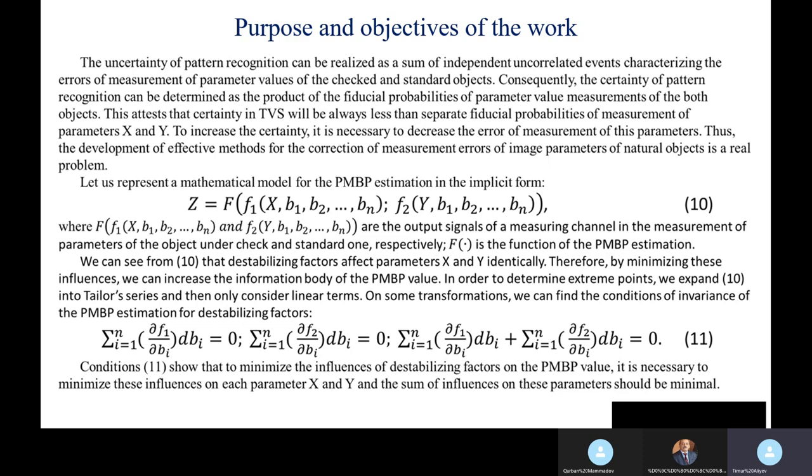In order to determine the extent points, we expand expression 10 into Taylor series and then only consider linear terms. On some transformations, we can find the conditions of invariance of the PMBP estimation for the stability factors, represented in expression 11. Conditions 11 show that to minimize the influences of the stability factors of the PMBP value, it is necessary to minimize those influences on each parameter X and Y, and the sum of the influences on the parameters should be minimal.